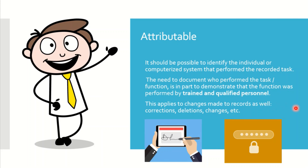Our first topic is Attributable. What does it mean? Attributable means identifying who has done the activity. It can be documented or electronic. Whenever you perform any activity, you do a 'Done By' signature, and someone who checks the document signs 'Checked By' or 'Verified By' — these signatures denote who has done the activity.